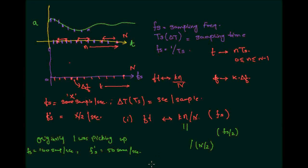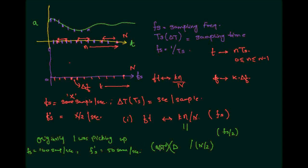Now, what happens to small k and small n? We have seen that the running time n is related to delta T, and we will replace delta T with delta T-dash corresponding to the new sampling frequency. Similarly, k was equivalent to delta F. Due to time constraints, I will derive this complete relationship in the next video. See you then.